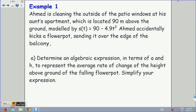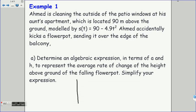Let's take a look at our first example. Ahmed is cleaning the outside of the patio windows at his aunt's apartment, which is located 90 meters above the ground. Modeled by s at t equals 90 minus 4.9 t squared, Ahmed accidentally kicks a flower pot, sending it over the edge of the balcony. So s at t, in this case, represents the position of the flower pot. You can picture this flower pot. Pretend that's the balcony up, an apartment three stories up. Ahmed decides to kick it from there, so there it goes right there. The only thing affecting is gravity. And this equation represents that curve.